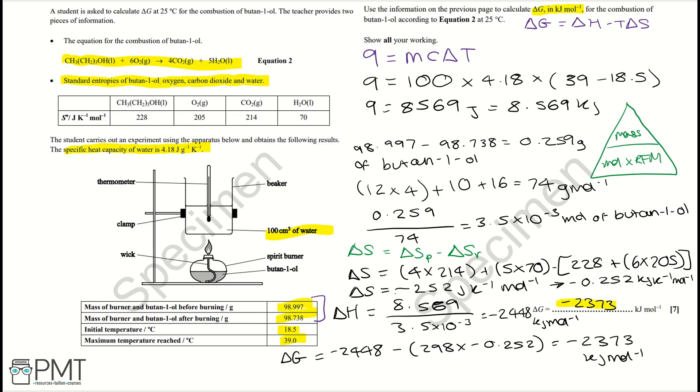To get the seven marks in this question, you get a mark for working out Q. You get a mark for working out your moles of butan-1-ol. You get a mark for working out your delta H, which I've written here as minus 2448. I've added the minus because it's a combustion reaction and that's exothermic.